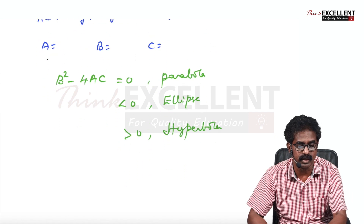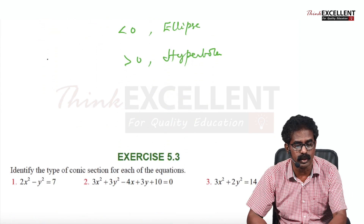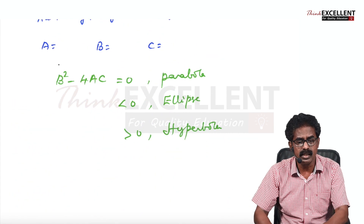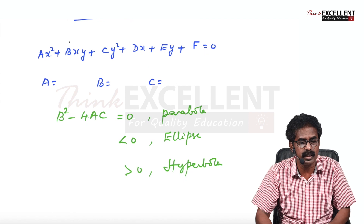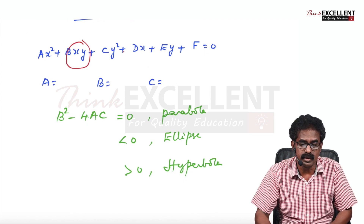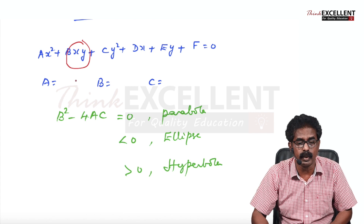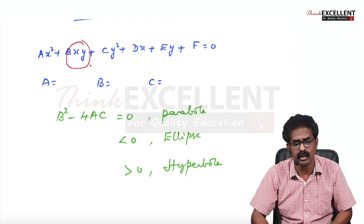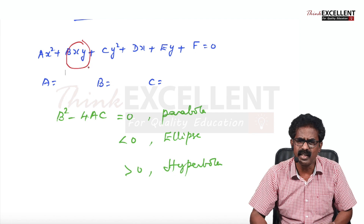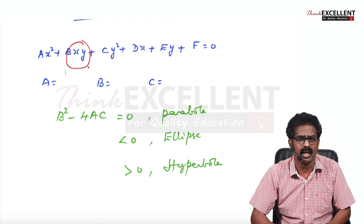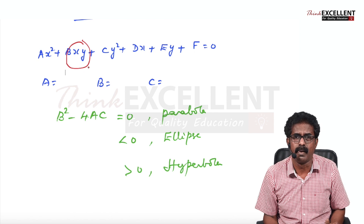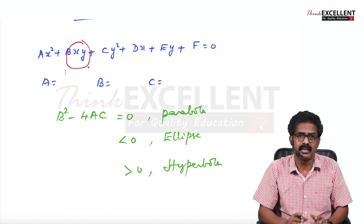I taught this in the first class on conics. This method using B²-4AC is useful when the XY term is present — it's the easiest method when there is an XY term. If there is no XY term, there are some very easy methods. A lot of rules are given, but if you learn them as rules you cannot understand anything; just try to understand.